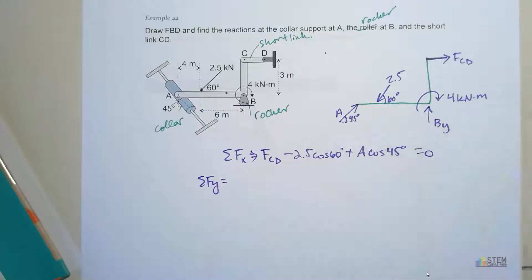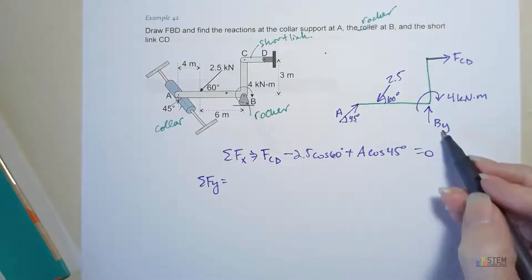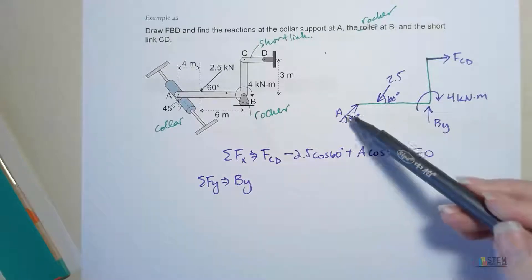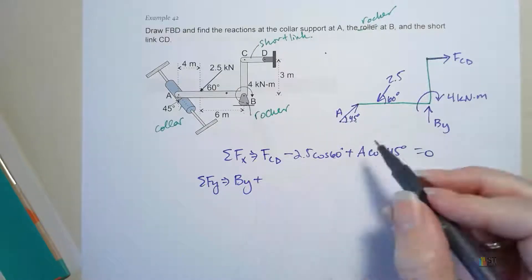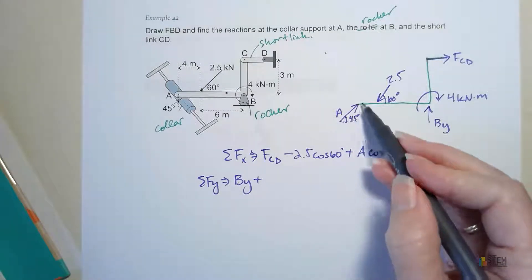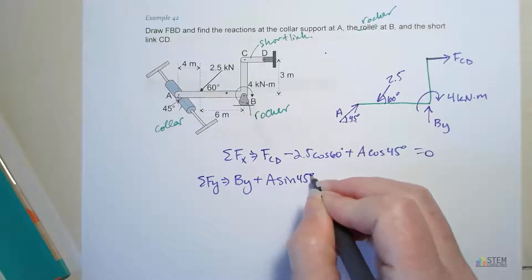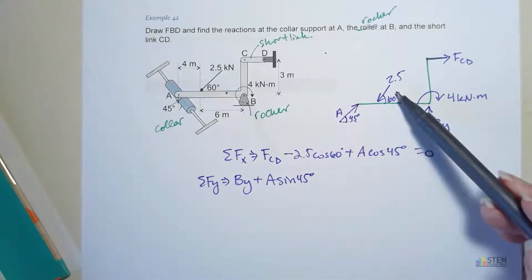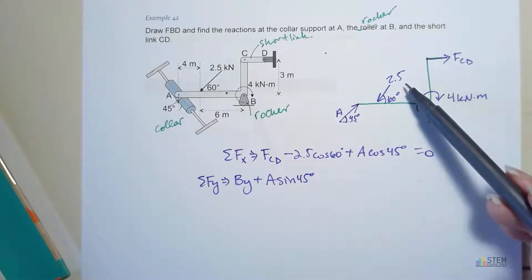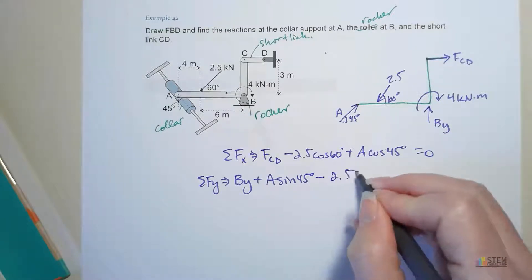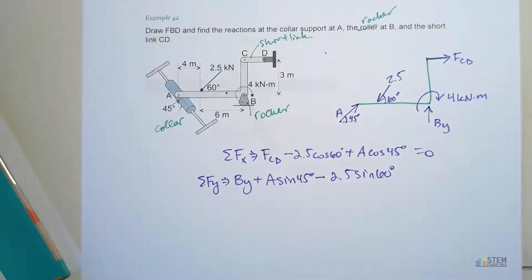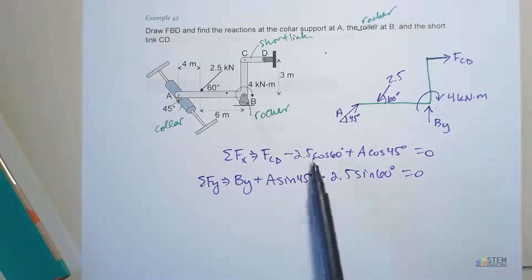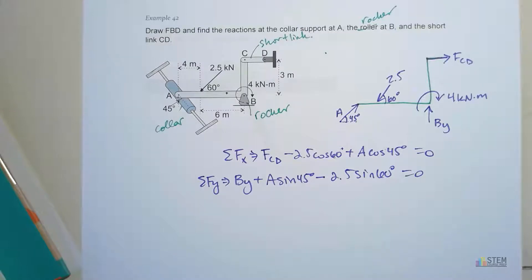For the Y components: we've got BY going up, plus A sine 45 for the collar's vertical component pointing up, minus 2.5 sine 60 for the applied force. Set that equal to zero. Again, we've got two equations but three unknowns, so we still don't have enough. We need one more equation — that's where the moment equation comes in.